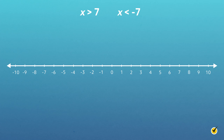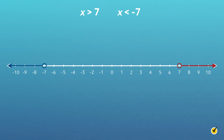Now we're ready to graph x is greater than 7 and x is less than negative 7. Following the same steps we've been practicing, graph both inequalities on the same number line. The first inequality shows an open circle at 7 with a line extending to the right. The second inequality shows an open circle at negative 7 with a line extending to the left.